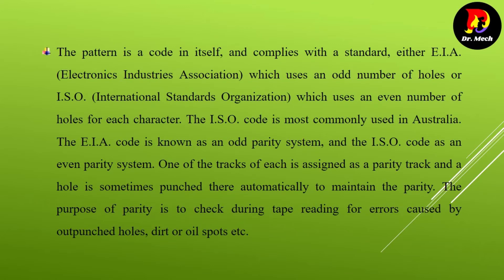The pattern is a code that complies with a standard — either EIA (Electronics Industries Association), which uses an odd number of holes, or ISO (International Standards Organization), which uses an even number of holes for each character. The ISO code is most commonly used in Australia. The EIA code is known as an odd parity system and the ISO code as an even parity system. One of the tracks is assigned as a parity track, and a hole is sometimes punched there automatically to maintain the parity.